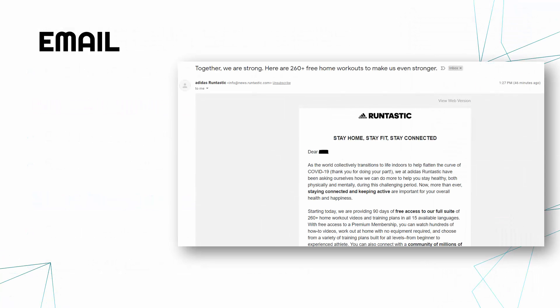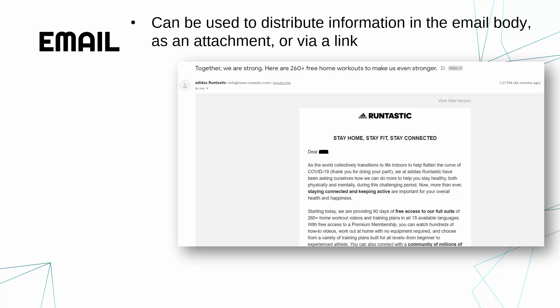A second example you'll be very familiar with is email. Emails are used a lot by companies to communicate and are very good at distributing information through the body of the email. You've also got the subject which summarises it, attachments, and links which take you to other websites or give more information in an attached file. These can be multimedia — you can have images and videos embedded to keep things more interesting.